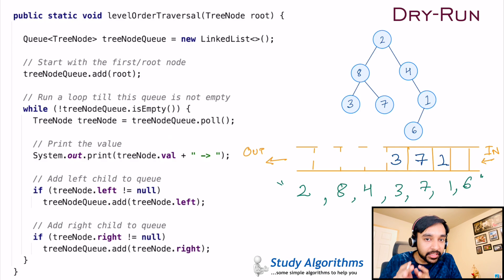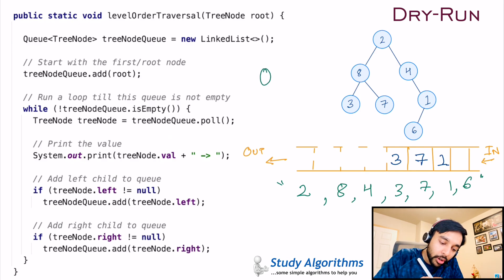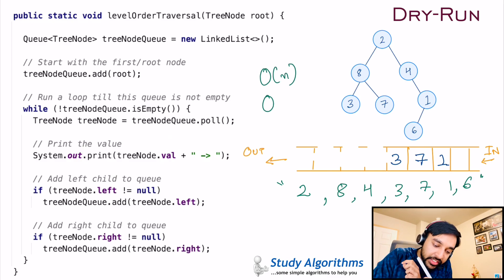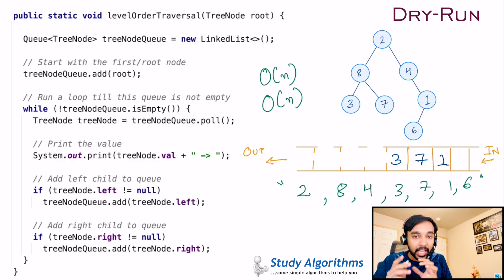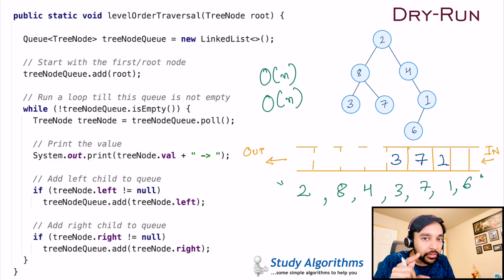This is how you define a level order traversal. The time complexity of this solution is O(n) because you are going through each node. The space complexity is also O(n) because you are maintaining a queue data structure that stores every element of the tree at least once.